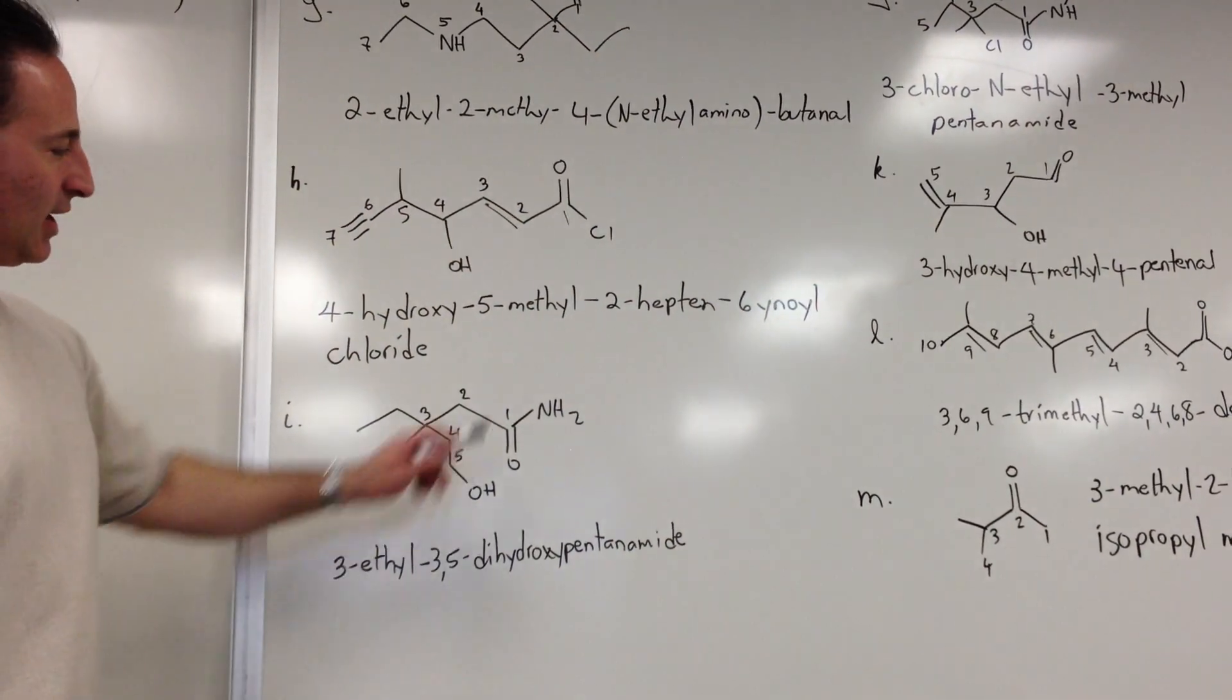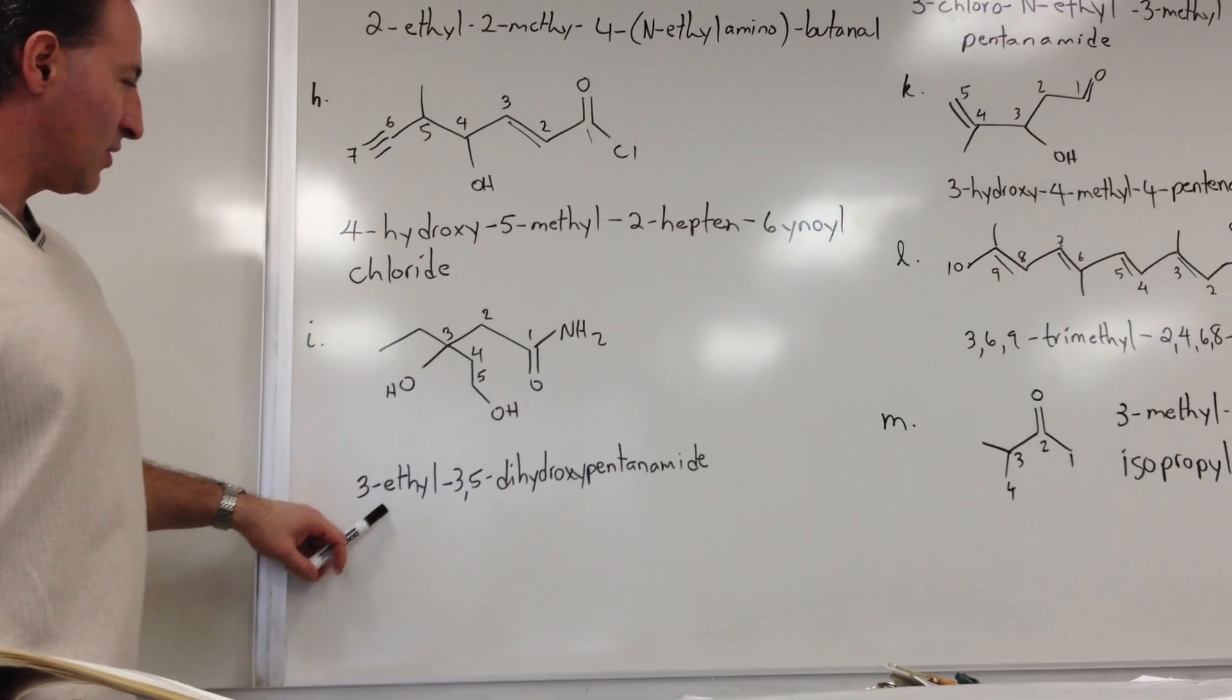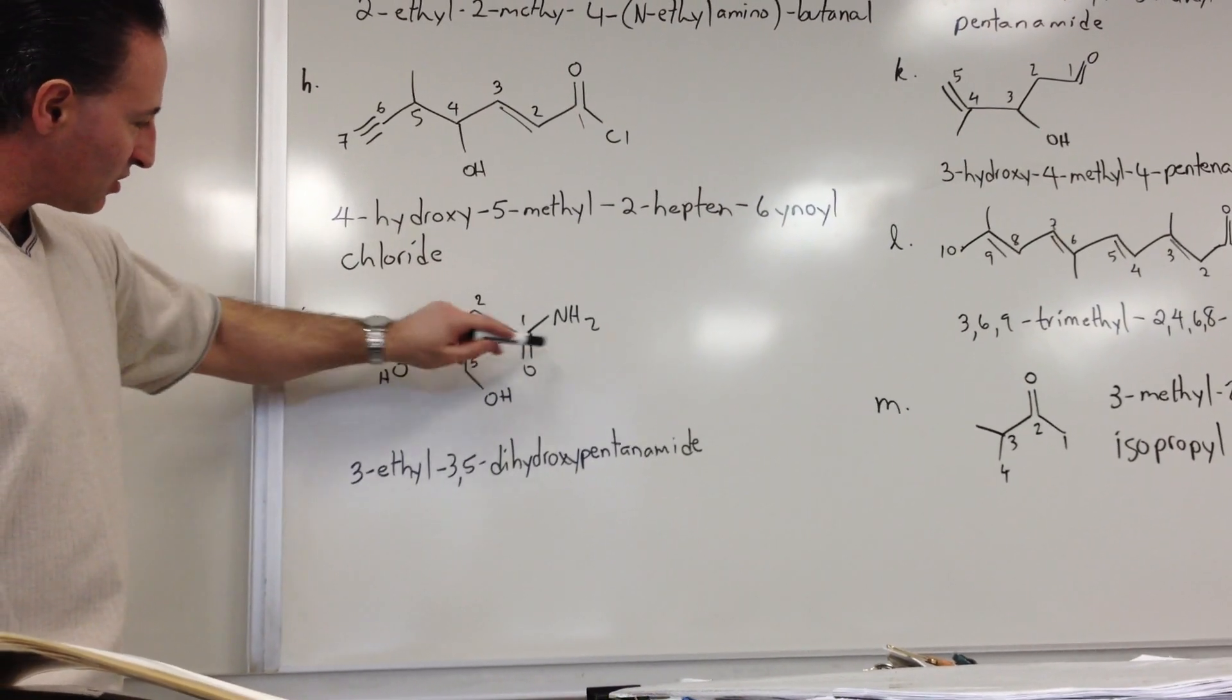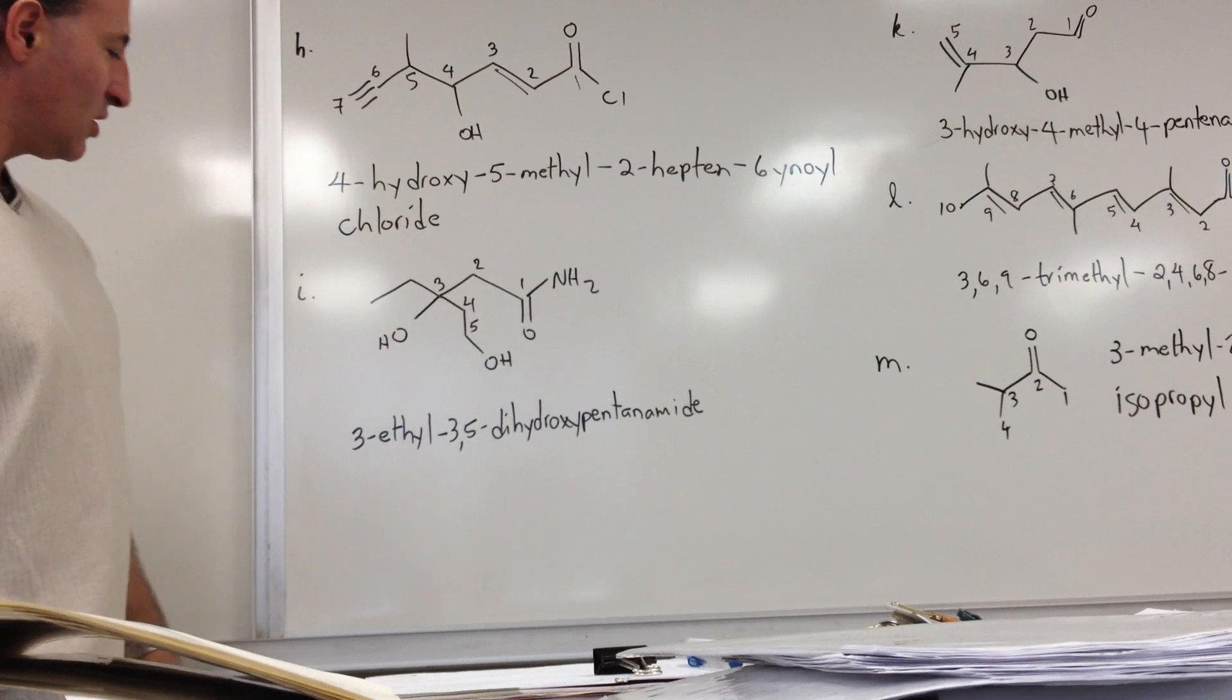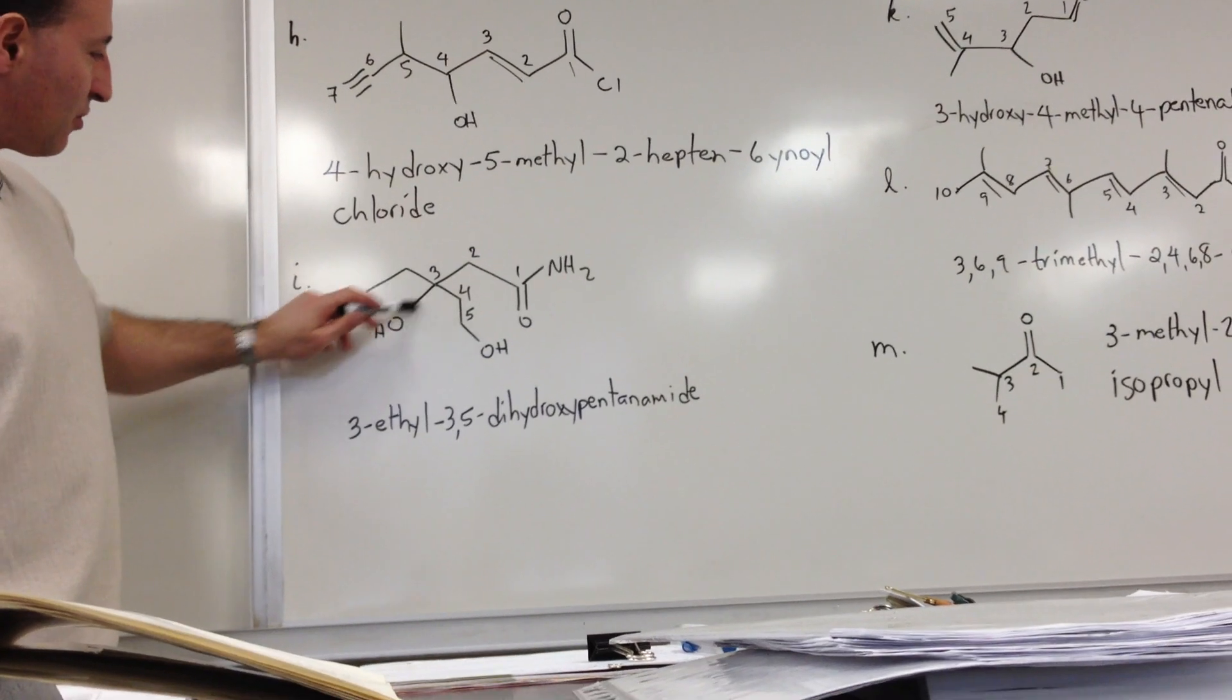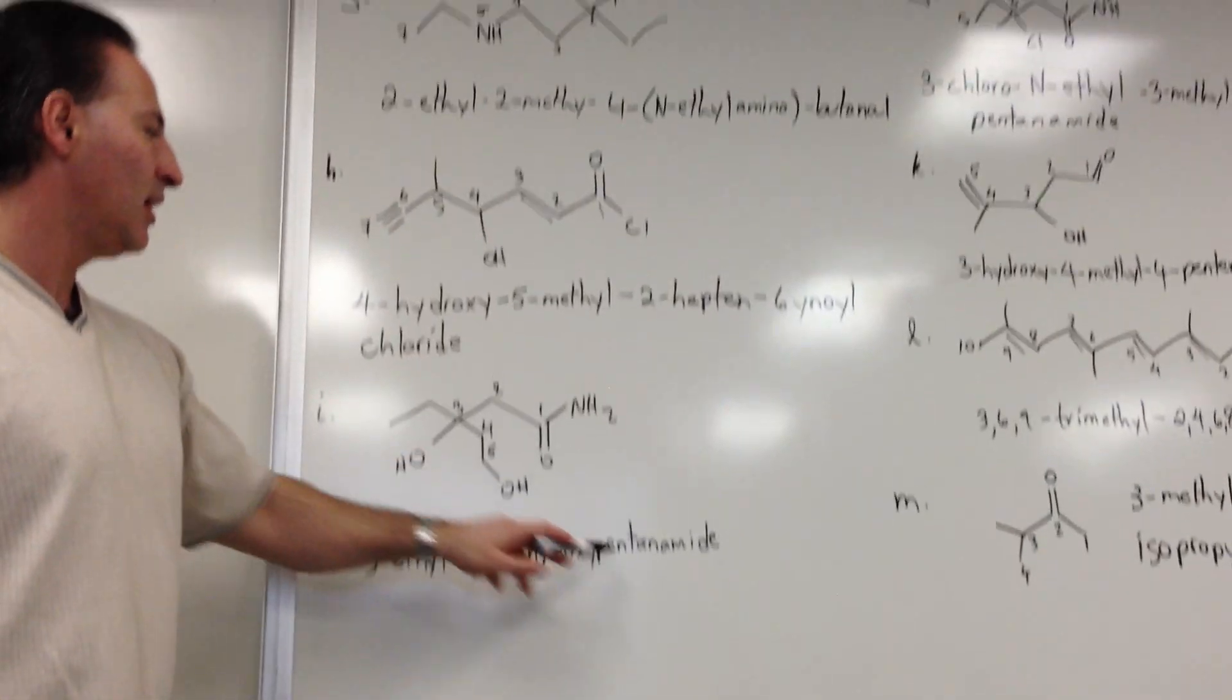This is an amide, you see a carbonyl next to an amine group, and it's got an ethyl group at the 3rd position. Notice that the chain is not drawn straight in this one, so the longest chain is this way, 5-carbons long with a hydroxy group on the end. There's a hydroxy at the 3rd position and at the 5th position, so we call this 3-ethyl-3,5-dihydroxy-pentanamide.